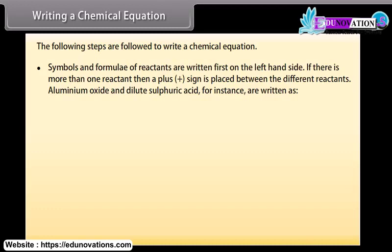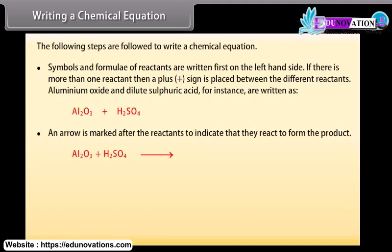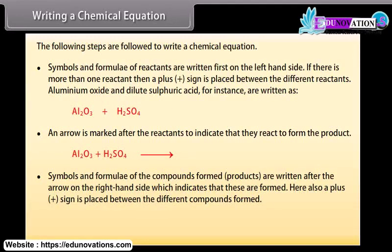Aluminum oxide and dilute sulfuric acid, for instance, are written as Al2O3 plus H2SO4. An arrow is marked after the reactants to indicate that they react to form the product. Symbols and formulae of the compounds formed, products, are written after the arrow on the right-hand side, which indicates that these are formed. Here also a plus sign is placed between the different compounds formed. For example, Al2O3 plus 3H2SO4 gives Al2(SO4)3 plus 3H2O.